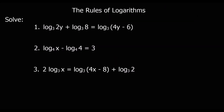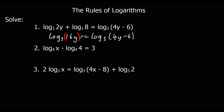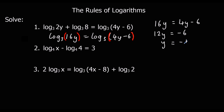Practice question one: two logs with the same base added together means we multiply the answers, so log base 3 of (2y times 8) equals log base 3 of 16y, which equals log base 3 of (4y minus 6). So 16y equals 4y minus 6. Subtracting 4y: 12y equals minus 6, so y equals minus a half.